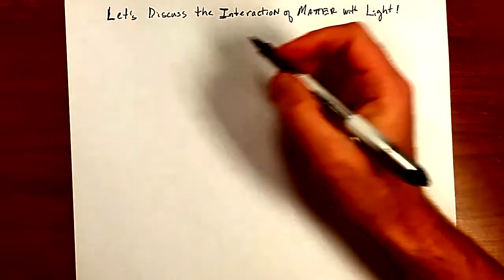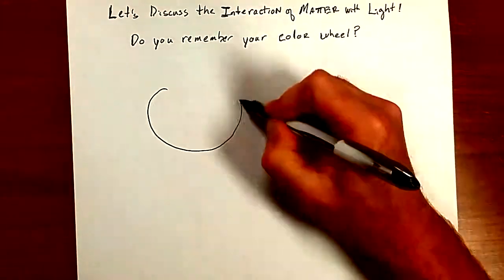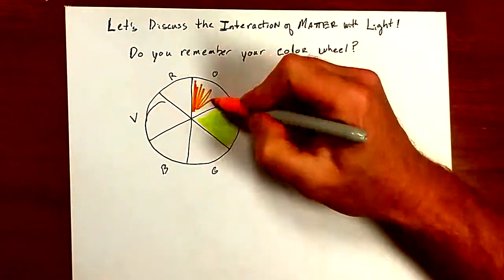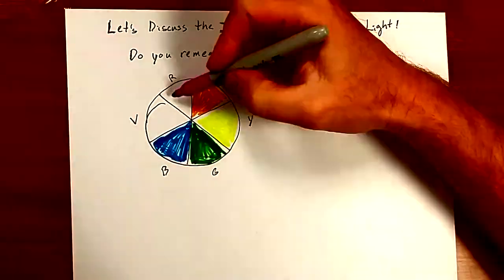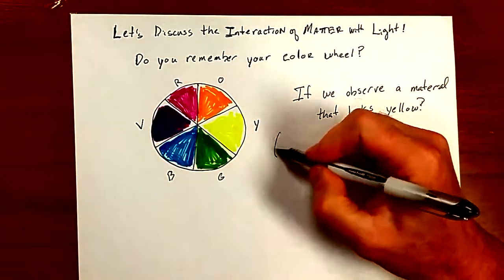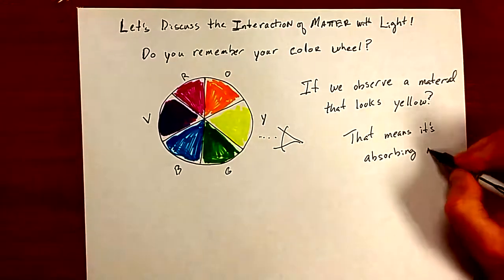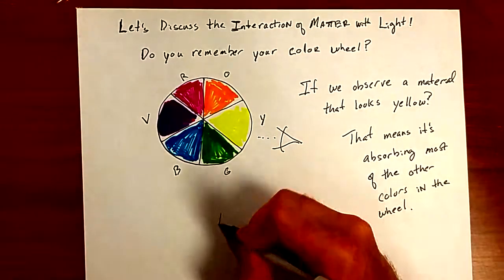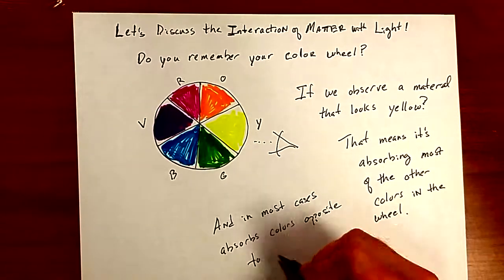Let's discuss the interaction of matter with light. Do you remember your color wheel? If we observe a material that looks yellow, that means it's absorbing most of the other colors in the wheel, and in most cases absorbs colors opposite to yellow. That means violet, blue, and red.